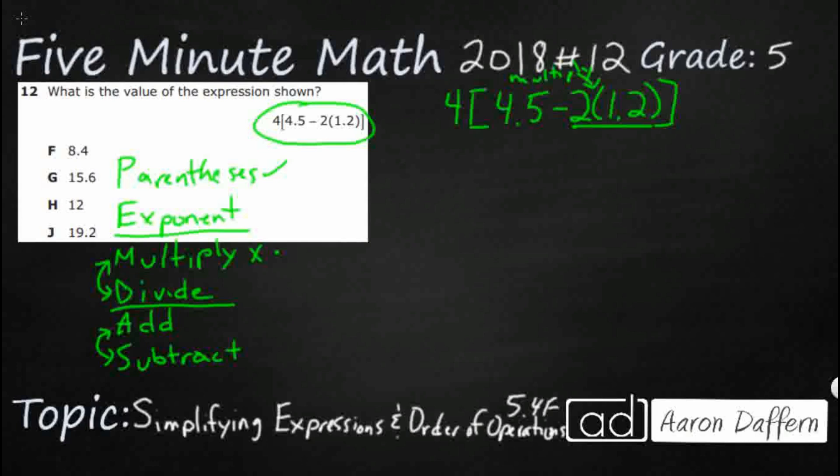So really if I wanted to rewrite it like this, I could do like this: 4.5 minus 2, and I'll just do times, but I'll do that x so you can see what it is, 1.2. That's really what that's doing right there.